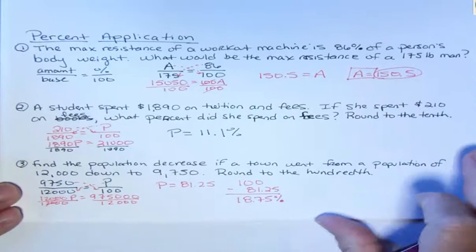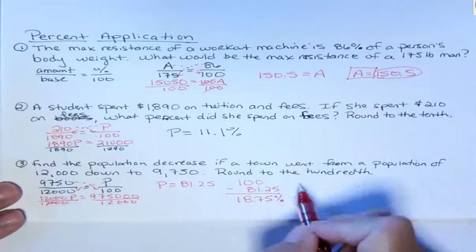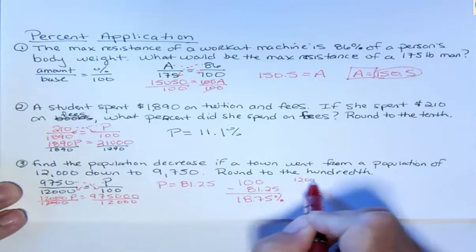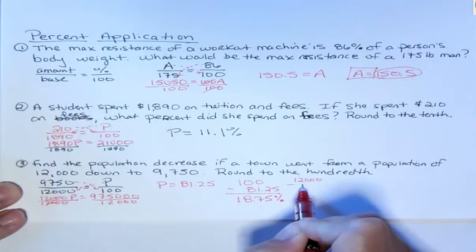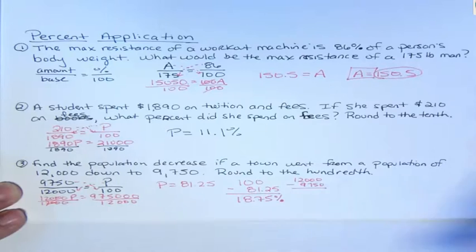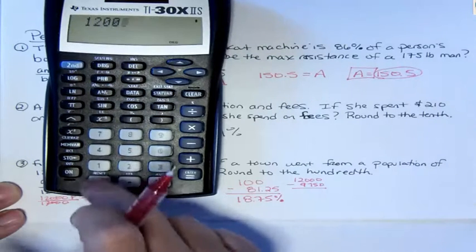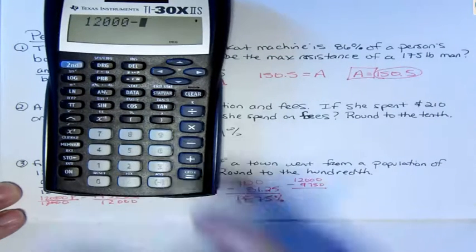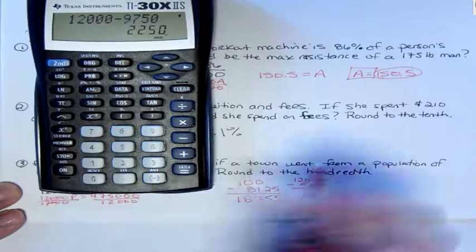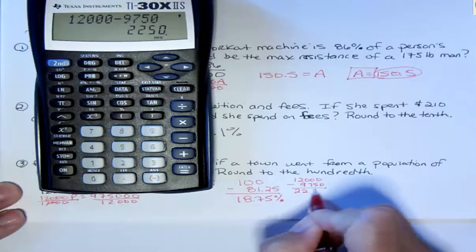So what I suggest you do instead is right from the beginning say, I'm looking for the decrease. Let me take the 12,000 that I started with and subtract the people that are still there, that is 12,000 minus 9,750, and see how many people are left. Well, there's 2,250 people left.